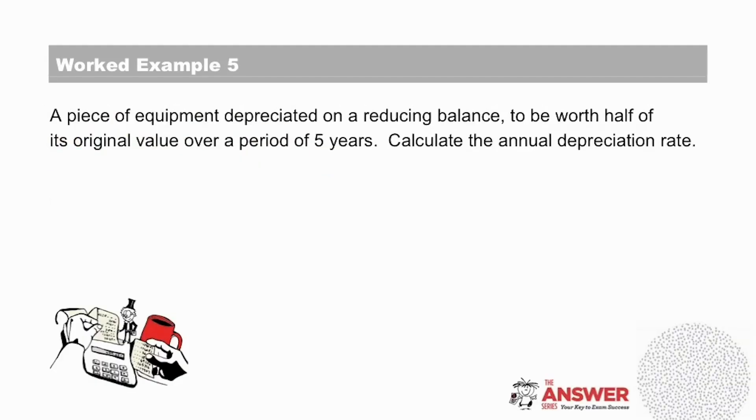Here is another example, which also happens to be about a piece of equipment. Again, we will read it through as a whole first. And then on the second read through, we can focus on the detail. Here is the first read: a piece of equipment depreciated on a reducing balance to be worth half of its original value over a period of five years. Calculate the annual depreciation rate.